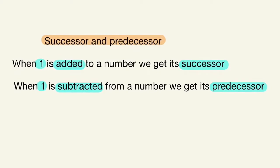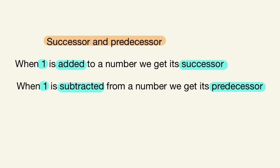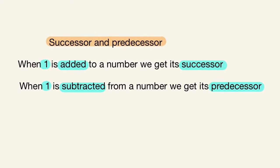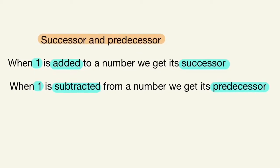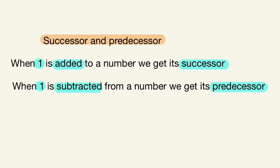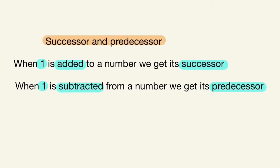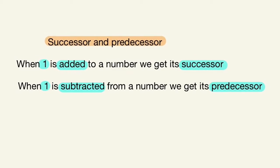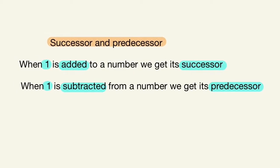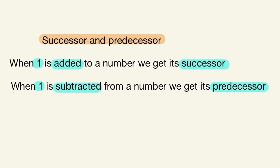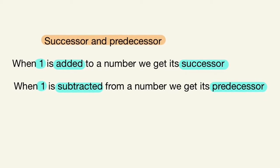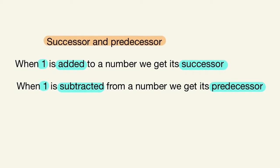Last class, we learnt about successor and predecessor. When one is added to a number, we get its successor. And when one is subtracted from a number, we get its predecessor.